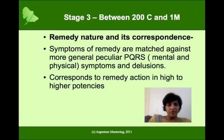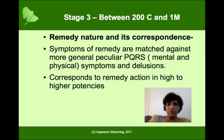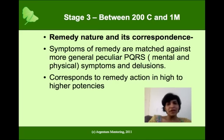Now at this stage, the remedies in provings have not really created these sorts of symptom pictures because not every remedy has been proven in 200c or 1M. But what's happened is during clinical experiences of different homeopaths who've been working at stage 3, you realize that these are the patients who respond very well to such high potencies. In fact, low potencies do not elicit much of a reaction in such people because they require those higher potencies to match them at that level, and that's how the correlation has been associated.